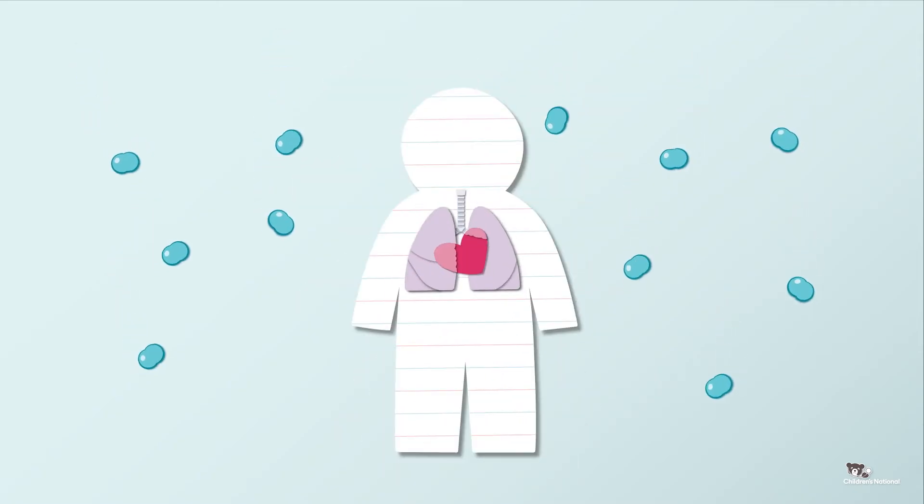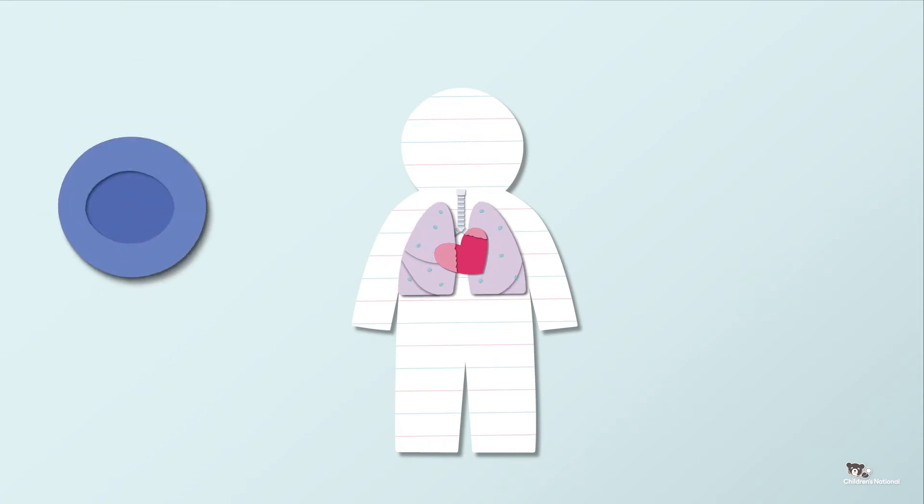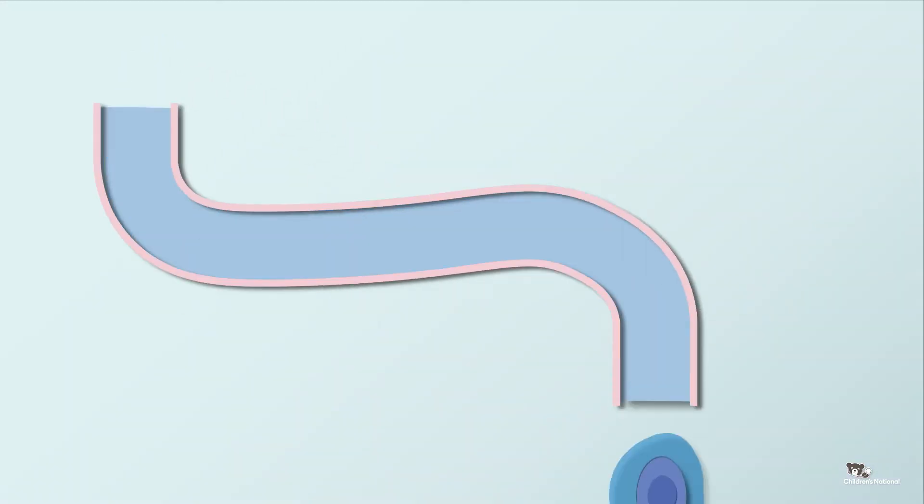When we breathe, the oxygen goes inside our lungs, so the blue blood has to go there to get more of it. To do this, it travels through tubes called veins.